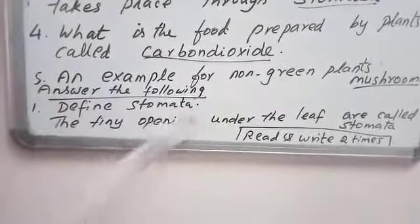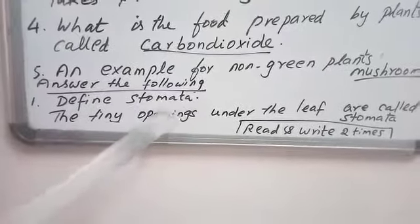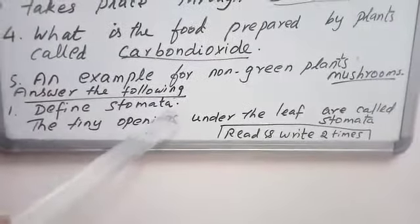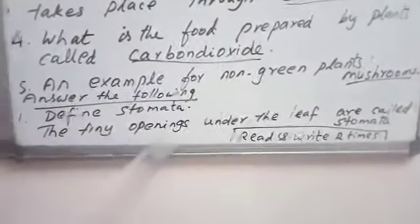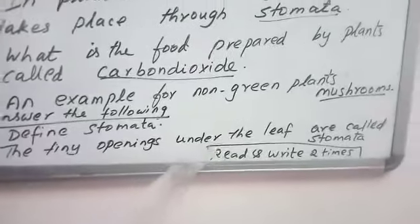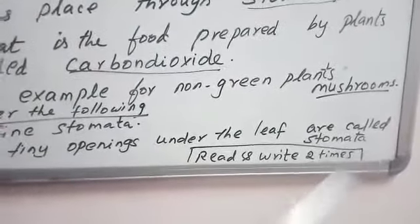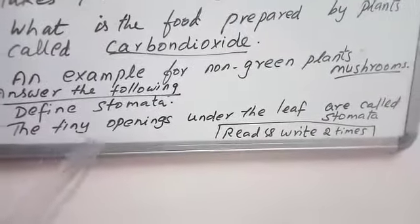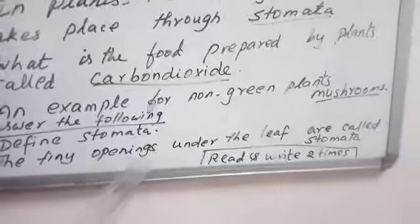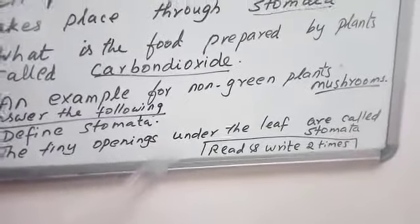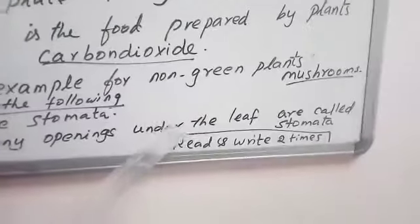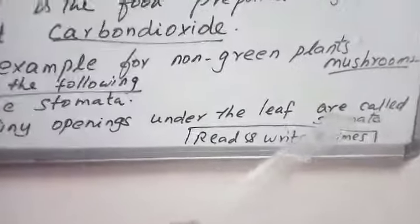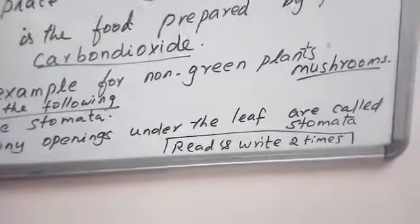Answer the following. Define stomata. What does it mean by stomata? Stomata is nothing but the tiny openings under the leaf are called stomata: T-I-N-Y O-P-E-N-I-N-G-S under the leaf are called stomata.